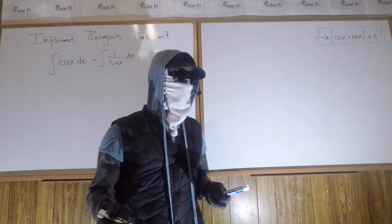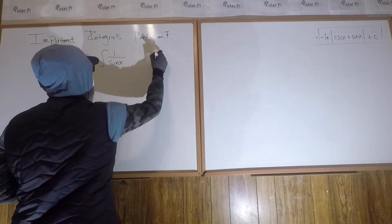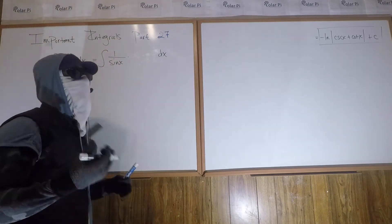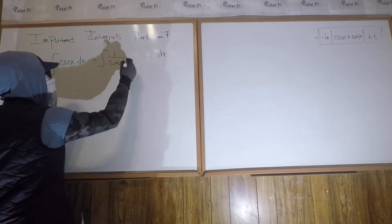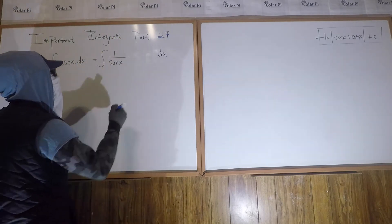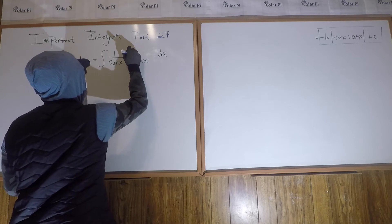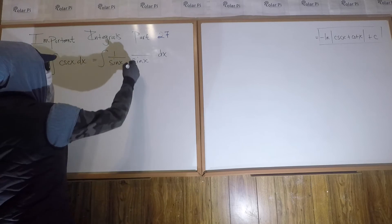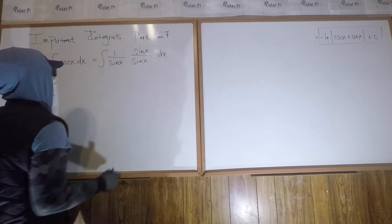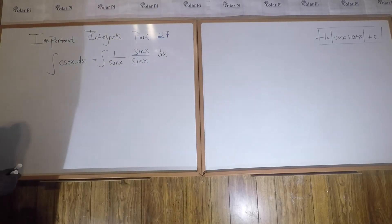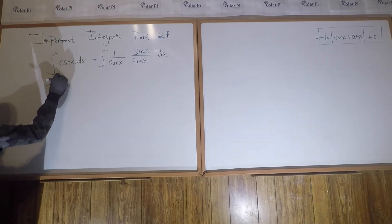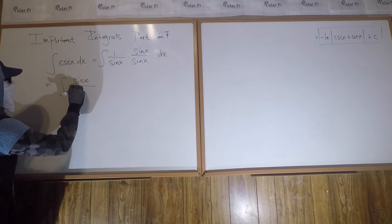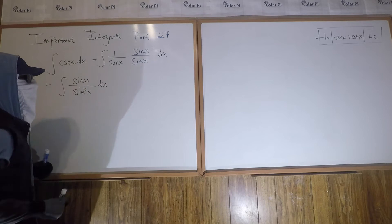Now, 1 over sin x dx is an integral that doesn't have much to manipulate, so we multiply stuff into it. We're going to multiply the denominator by sin x, and since I'm only allowed to multiply by 1, the numerator of this must also be sin x. So this is equal to the integral of sin x over sin squared x dx.